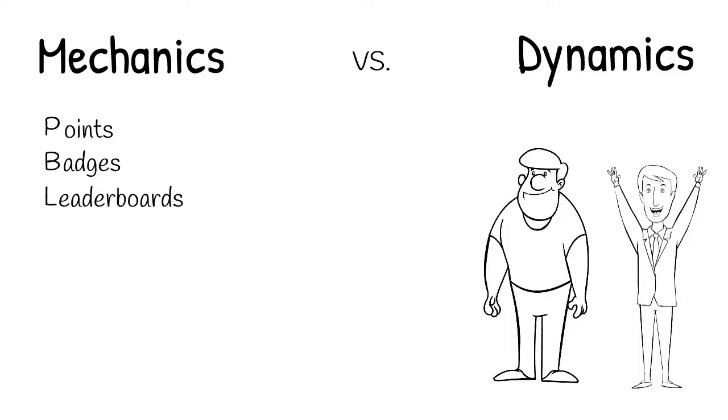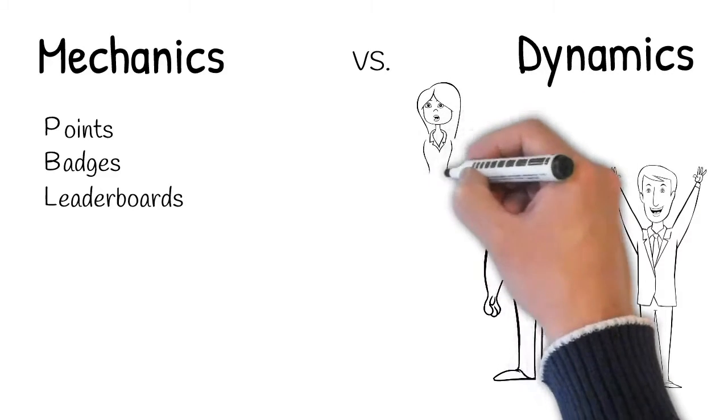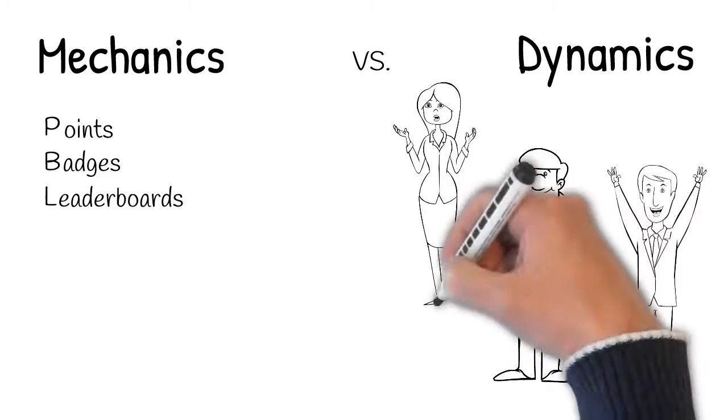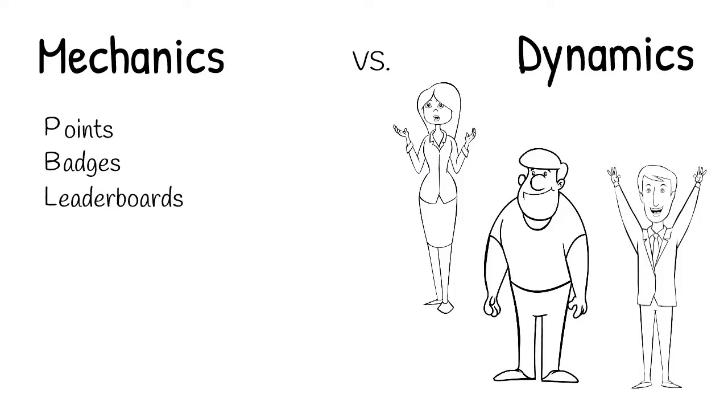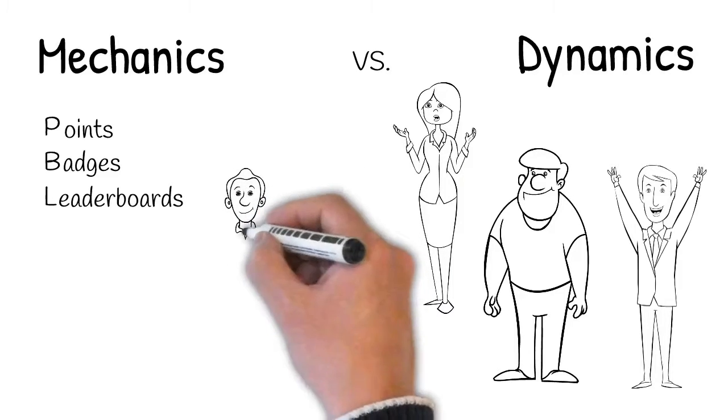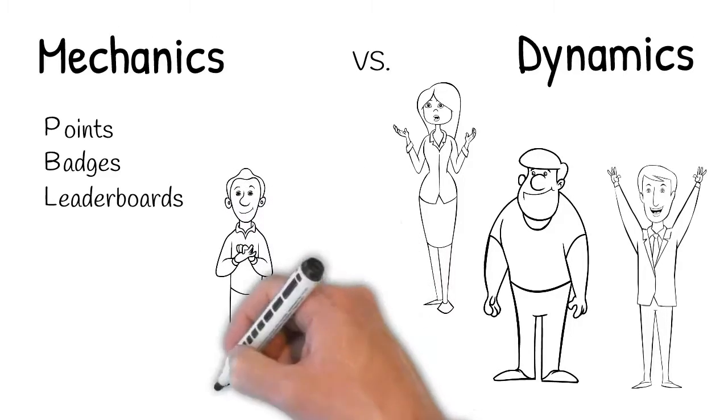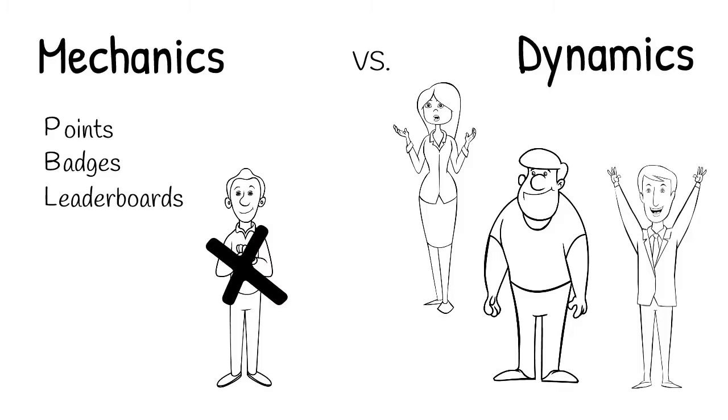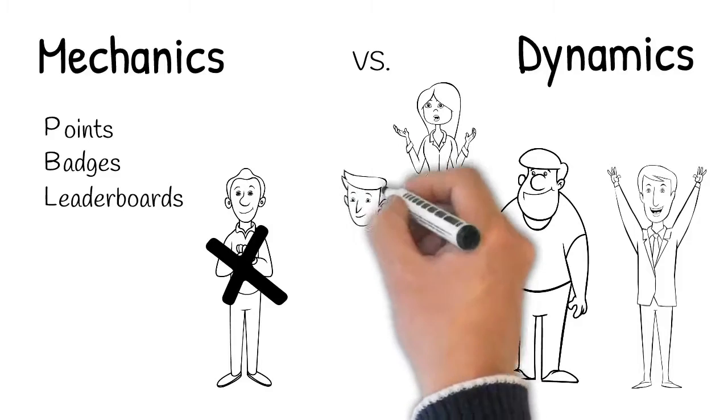High status people will only be attracted to leaderboards if it means something and everybody is aware that they've achieved a certain status on the leaderboard. Leaderboards are extremely stressful for high acceptance people because they're very aware when they're not measuring up. They're afraid of being criticized and letting people down.